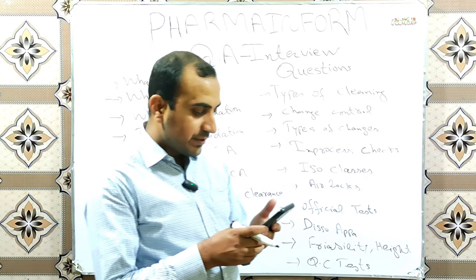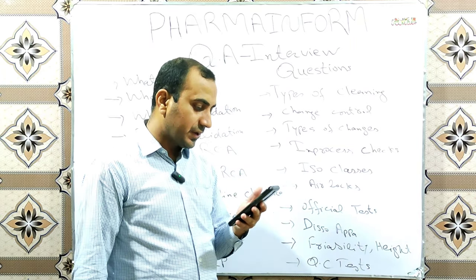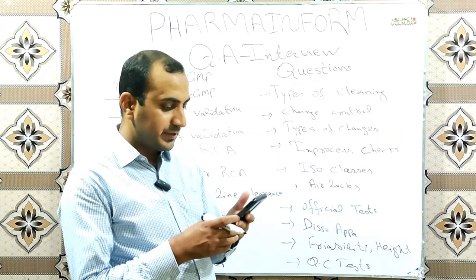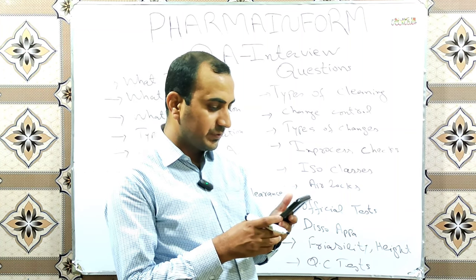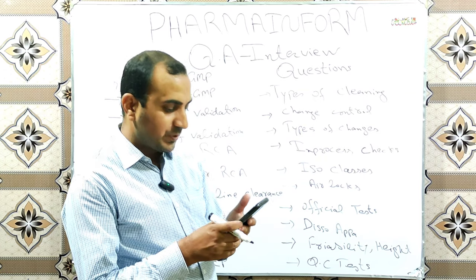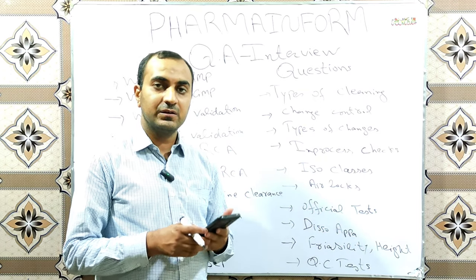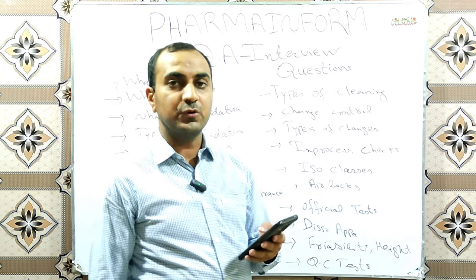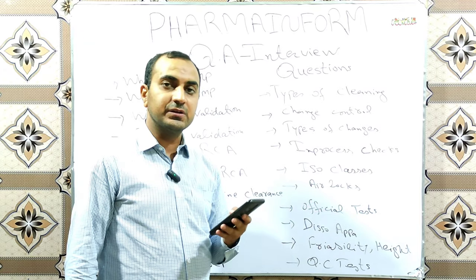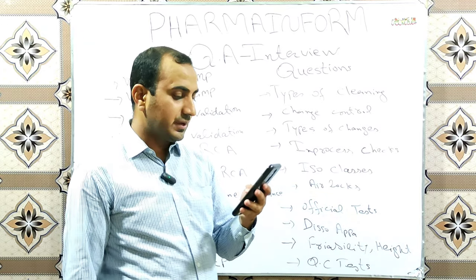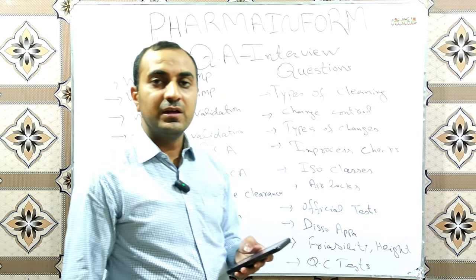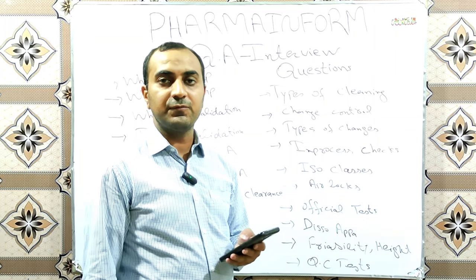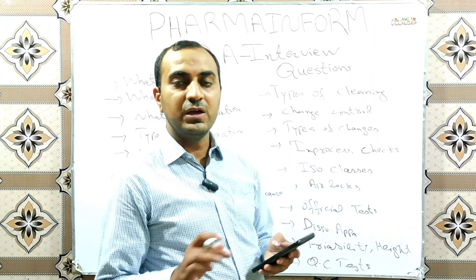Define validation. What is validation? Validation is the documented evidence that gives a high level of assurance that a specific process or method will consistently produce the required level of results with predefined specifications and quality. There are four types of validation: prospective validation, concurrent validation, retrospective validation, and revalidation. For detailed explanation, search 'validation types pharma inform' on Google.